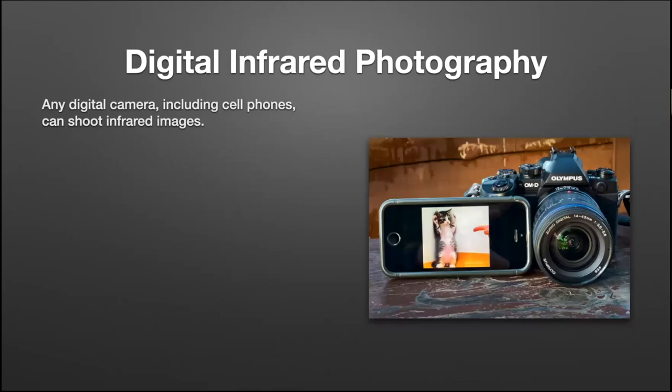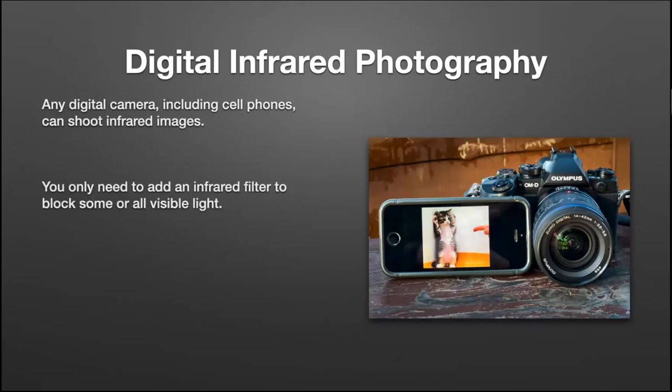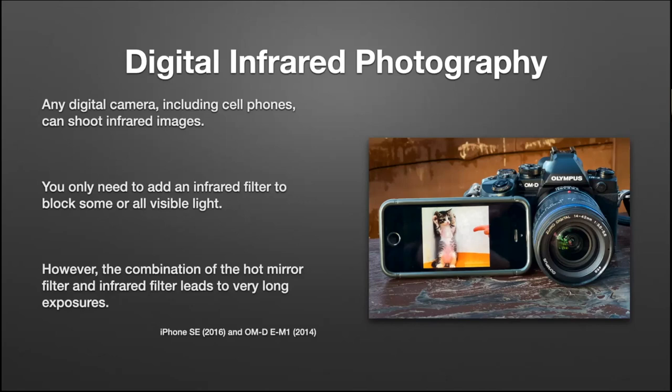One nice thing about digital photography is all digital cameras, including cell phones, can actually shoot infrared images. Even though they have that hot filter in front of them, some infrared light can still get through. To shoot infrared on a cell phone or regular camera, you just use a tripod and long exposures. The hot mirror plus an infrared filter can lead to one or two minute exposures very easily.